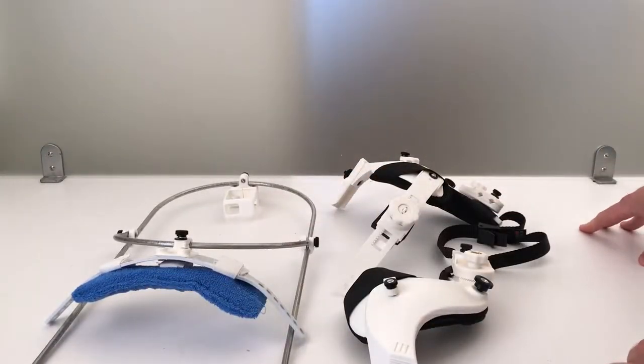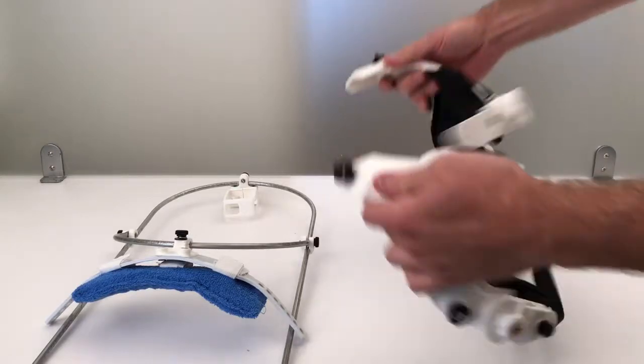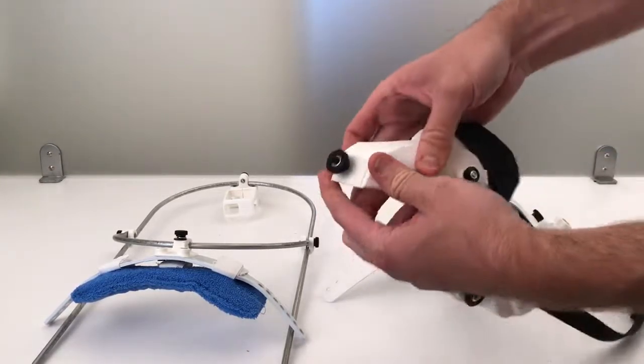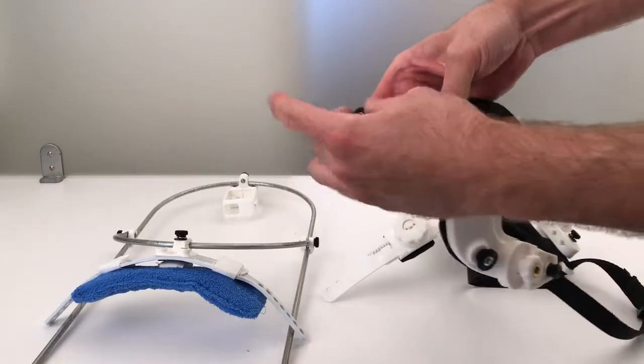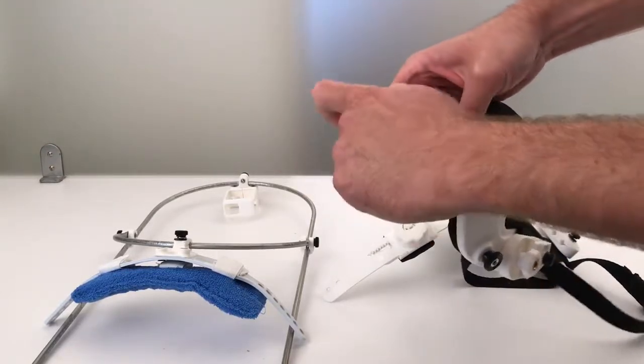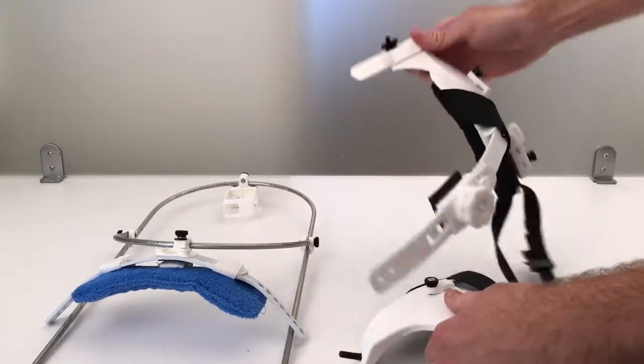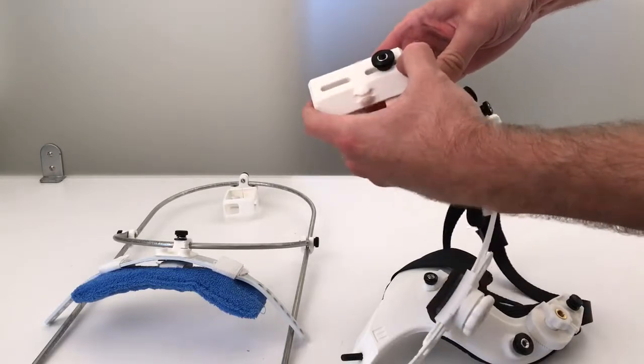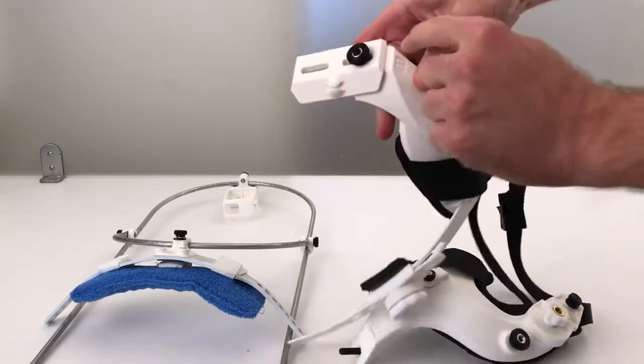The first step in putting it together is going to be putting the head shells together. So you're going to loosen the knob here on the head shell that does not have the top bracket block on it. This is the head shell that does have the top bracket. So I'm going to loosen this knob over here and adjust this out to a normal width.